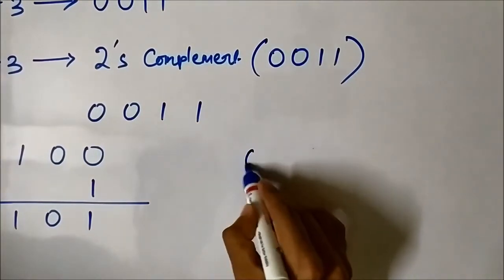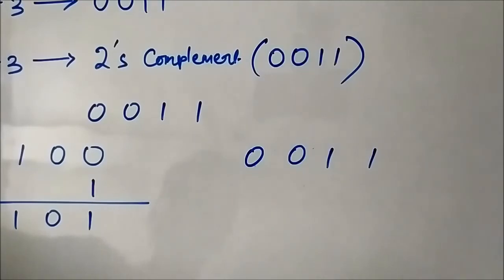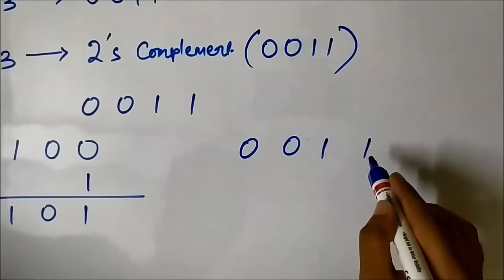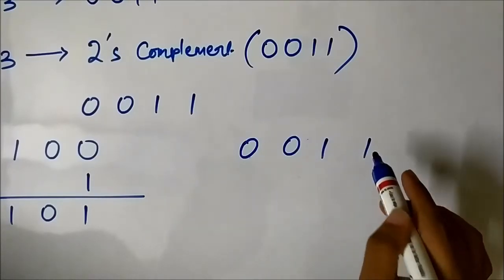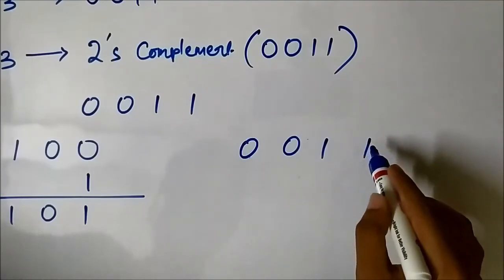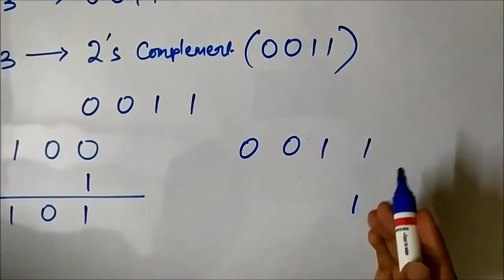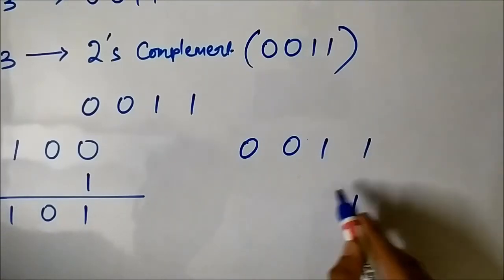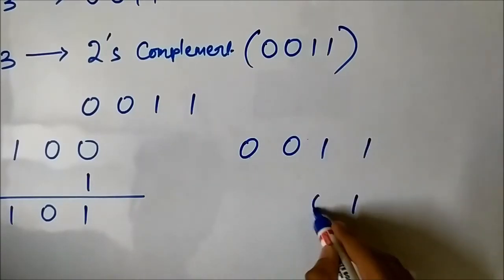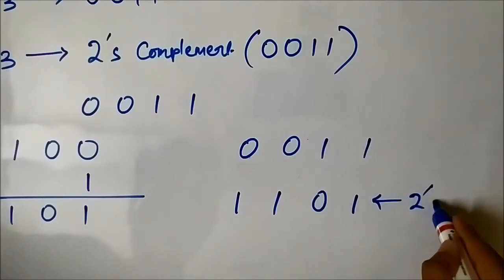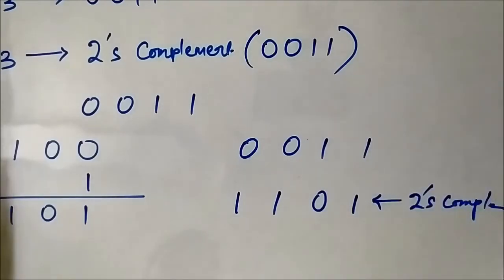The shortcut method is to write the number starting from the LSB: copy the bits exactly as they are until you encounter the first 1. Here, the LSB bit itself is 1, so we copy that bit. After that first 1 encountered, you take the 1s complement — that is, invert the remaining bits. So this gives us 1101 directly as the 2s complement. Please check out that dedicated 1s and 2s complement video to understand this better.